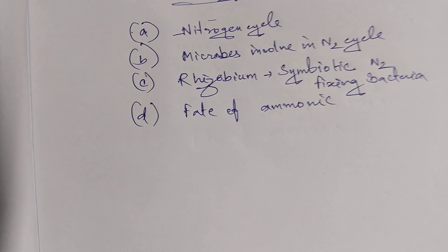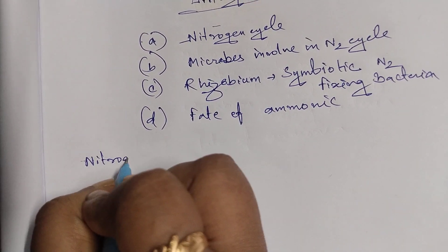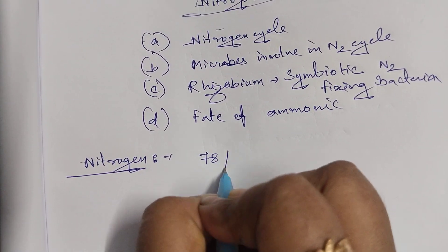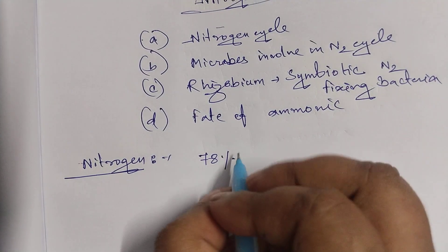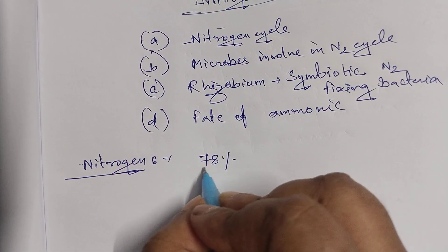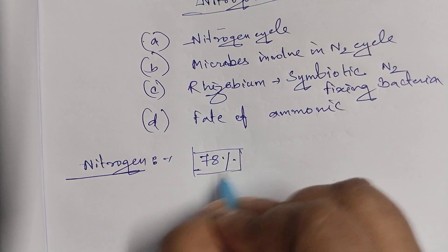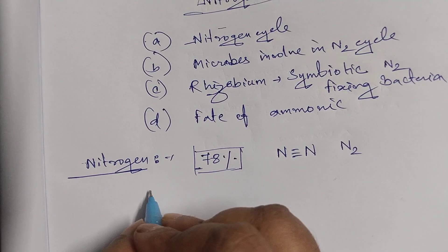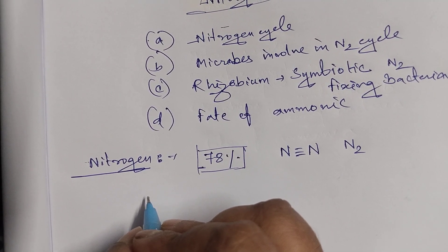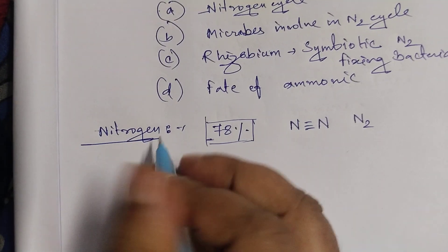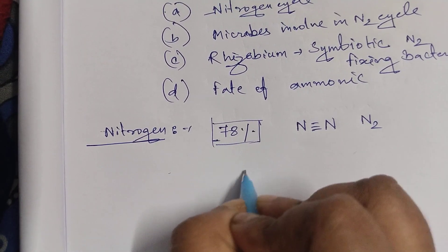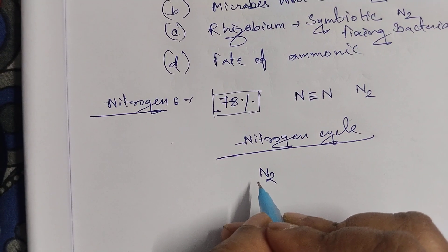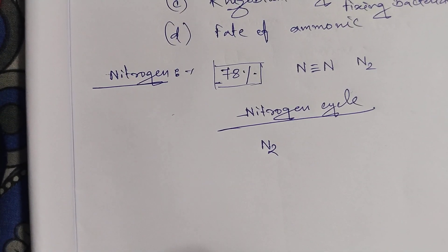In the nitrogen cycle, almost 78 percent of the air is nitrogen, present in the form of N₂, rather than other gaseous elements. Nitrogen is limiting in both natural and artificial ecosystems. Now I am discussing the nitrogen cycle.